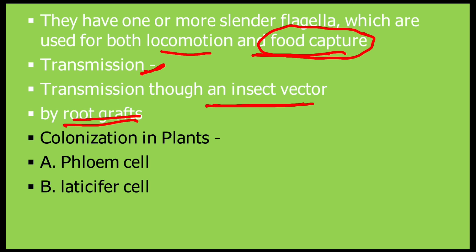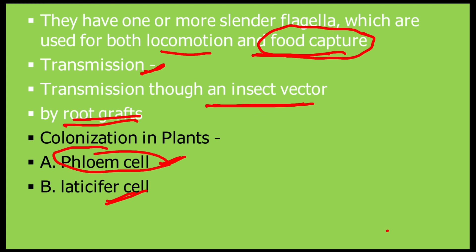Colonization in plants: Phytomonas infects two specific cell types in plants — either phloem cells or laticifer cells. Some protozoa infect phloem cells, while others infect laticifer cells.